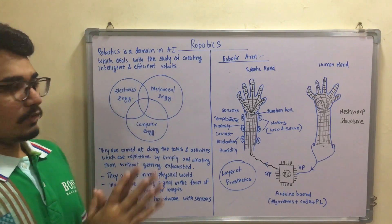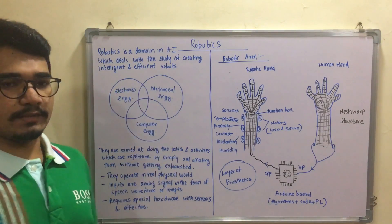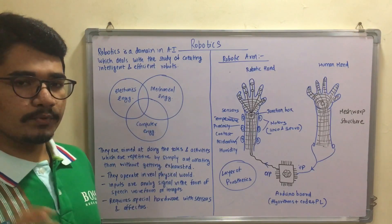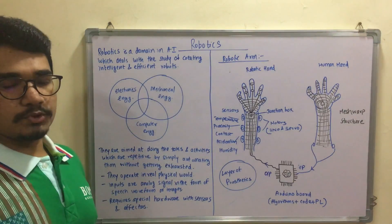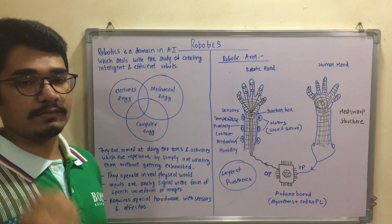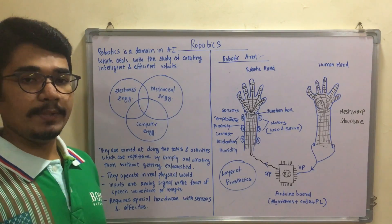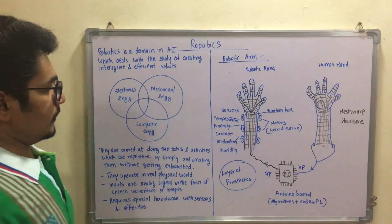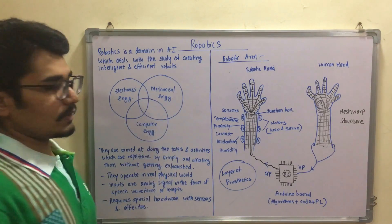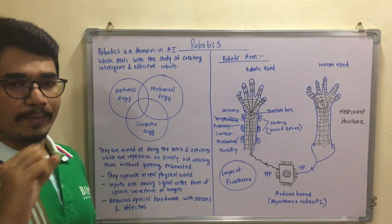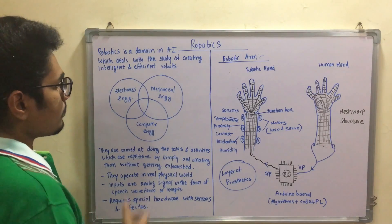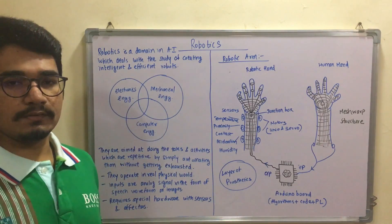The three engineering pillars are: electronics engineering, mechanical engineering, and computer engineering. Electronics engineering is mainly used for designing the circuits inside the robots and identifying which sensors and effectors are needed and which are compatible with the mechanical components. Mechanical engineering covers the arms, pistons, suction pumps, and all physical construction. Computer engineering determines which particular area the robot should be used in.